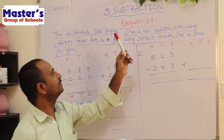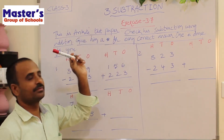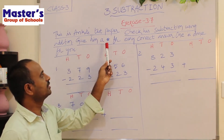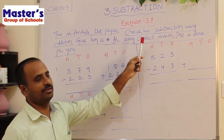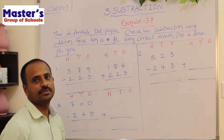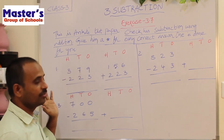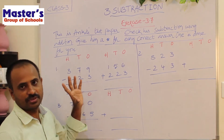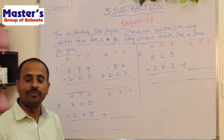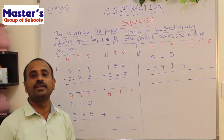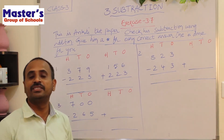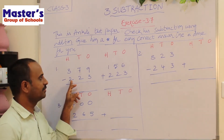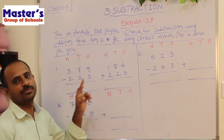We will practice problems in exercise 3.7 — how to check the subtraction by using addition, that means how to verify our answer. This is Ankit's test paper. Check his subtraction using addition and give him a star mark for every correct answer. One is done for you.